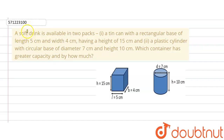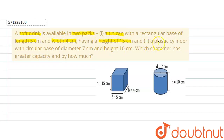The given question says that a soft drink is available in two packs. A tin can with a rectangular base of length 5cm and width 4cm having a height of 15cm. The other is a plastic cylinder with a circular base of diameter 7cm and height 10cm. Which container has greater capacity and by how much?